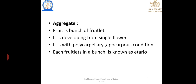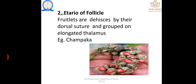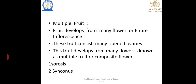Aggregate fruit: a bunch of fruitlets developing from a single flower with a polycarpellary apocarpous condition; each fruitlet is known as etaerio. Etaerio of berries — fruitlets are single-seeded and separate; some fruitlets fuse to form a composite structure, for example Annona. Etaerio of follicles — fruitlets dehisce by their dorsal sutures and the group is elongated on a thalamus, for example Michelia champaca.